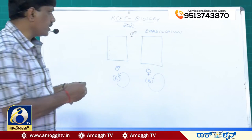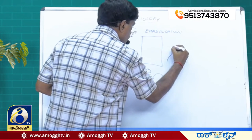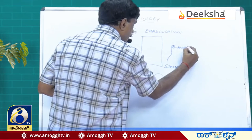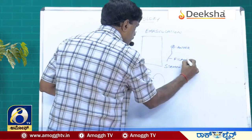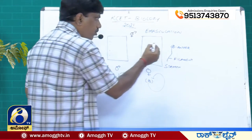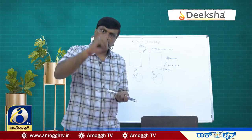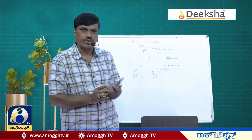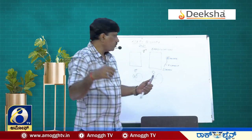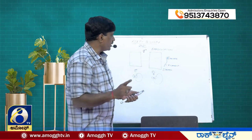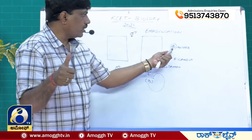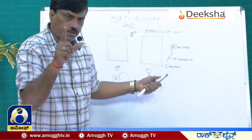What is emasculation? The stamen is made up of anther and filament. The anther is where pollen grains are formed, which contain the male gametes. In emasculation, we remove the anthers — or if possible the entire stamen — from the female parent before they dehisce. This is very important: it must be done before dehiscence. The procedure is defined as the removal of undehisced anthers from the female parent.